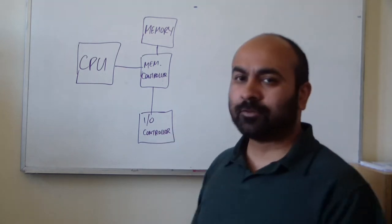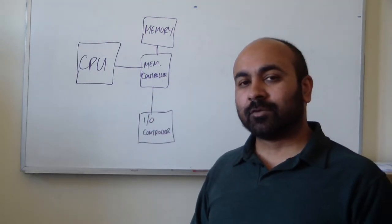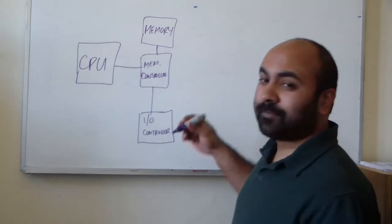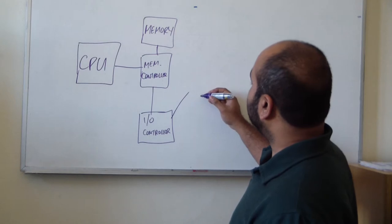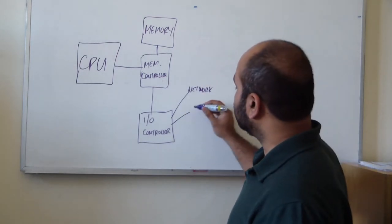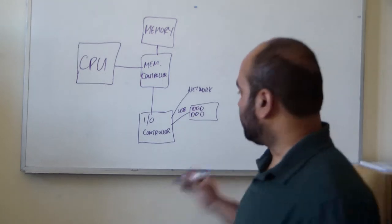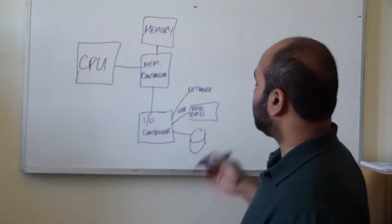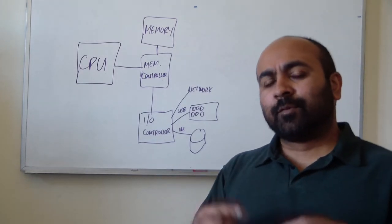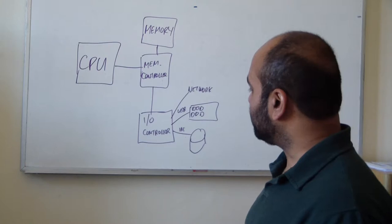Then we have something else: typically another controller or set of controllers in your computer, which we call the I/O controller. The input/output controller manages all of the different input and output devices that you have in your computer and connects these into the CPU and memory. These devices include the network, USB (so you could have a keyboard), and disks — with maybe an IDE interface to those devices. There are lots of different ways of connecting these devices, and this is all managed by the suite of hardware we call the I/O controller.